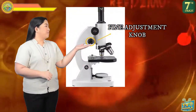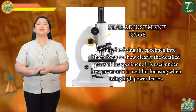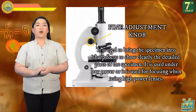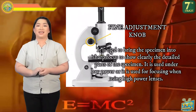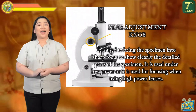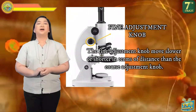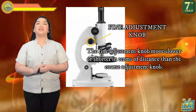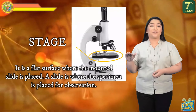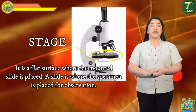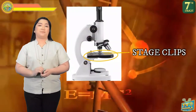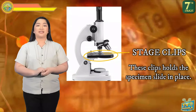The fine adjustment knob is used to bring the specimen into sharp focus to clearly show the detailed parts of the specimen. It is used under low power or for focusing when using high power lenses. Unlike the coarse adjustment knob, the fine adjustment knob moves slower and covers a shorter distance. The next part is the stage — a flat surface where the mounted slide is placed. A slide is where the specimen is placed for observation, and the stage consists of stage clips that hold the specimen slide in place.